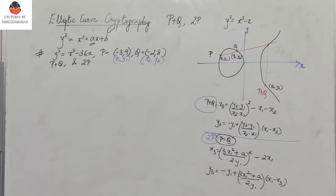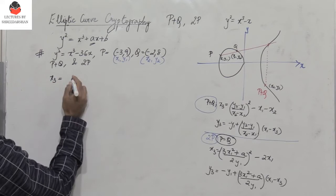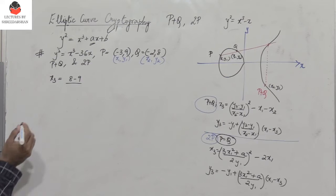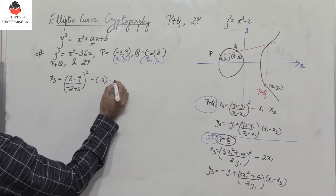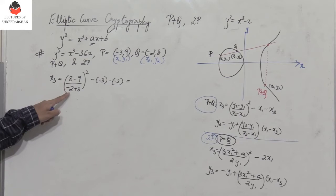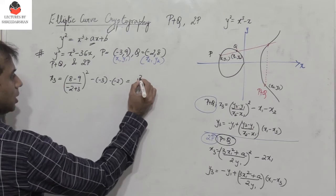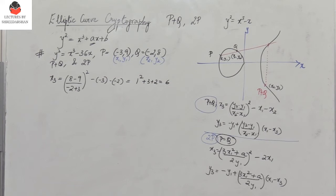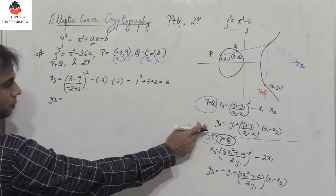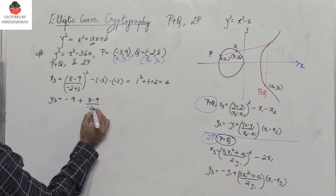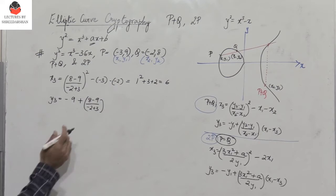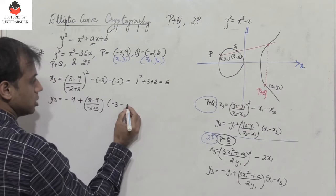For P plus Q, substituting the values: x3 equals (y2 minus y1) over (x2 minus x1), the whole squared, minus x1 minus x2. So x3 equals (8 minus 9) divided by (minus 2 minus (minus 3)), the whole squared, minus (minus 3) minus (minus 2). This gives (minus 1 divided by 1) squared plus 3 plus 2. You have to be very careful with the signs.